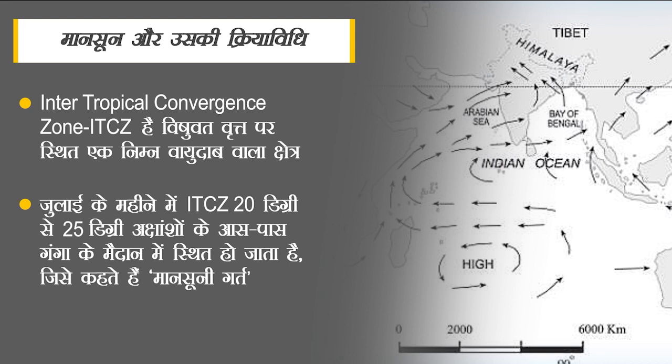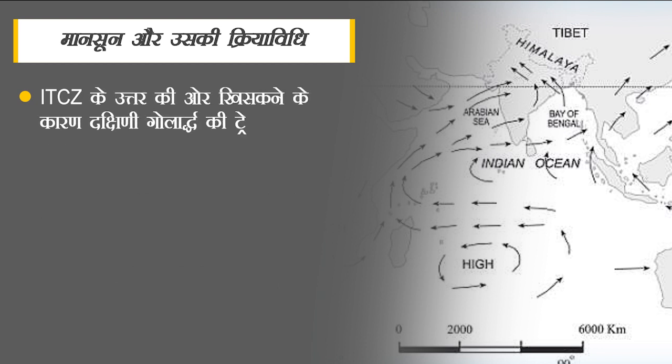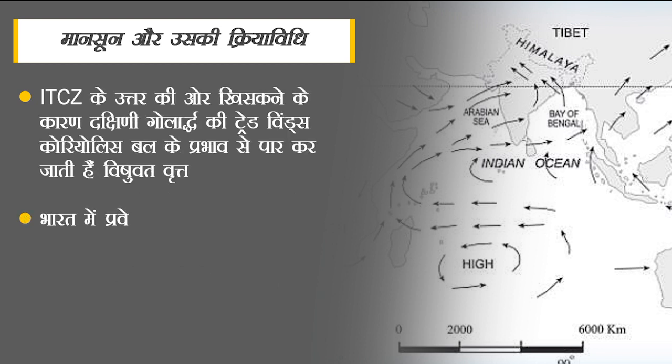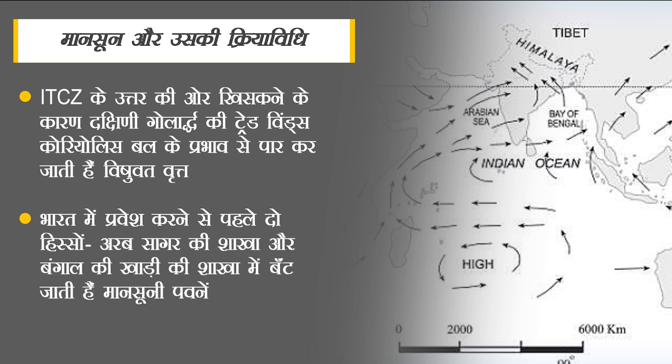जुलाई के महीने में ITCZ 20°-25° अक्षांशों के आसपास गंगा के मैदान में स्थित हो जाता है - इसे मानसूनी गर्त कहते हैं। यह मानसूनी गर्त उत्तर की ओर खिसकने के कारण दक्षिणी गोलार्ध की Trade Winds कोरियोलिस बल के प्रभाव से विषुवत वृत्त को पार कर जाती हैं और दक्षिण-पश्चिम से उत्तर-पूर्व की ओर बहने लगती हैं। गर्म महासागर के ऊपर से गुजरने के कारण ये पवनें अपने साथ पर्याप्त मात्रा में नमी लाती हैं। इनकी दिशा दक्षिण-पश्चिम होने के कारण इसे दक्षिण-पश्चिम मानसून कहा जाता है।